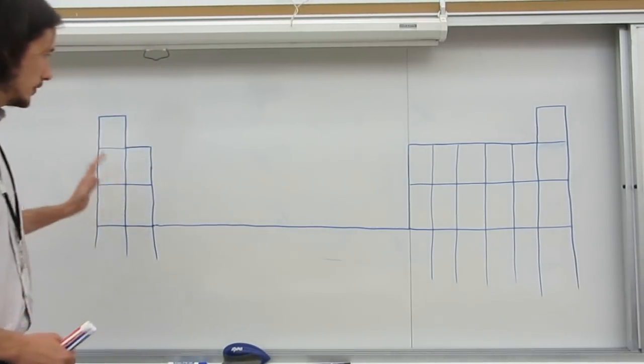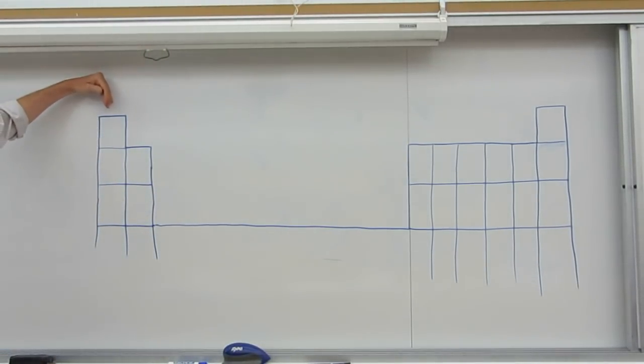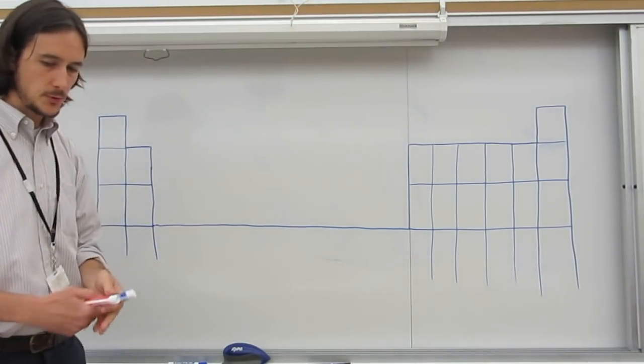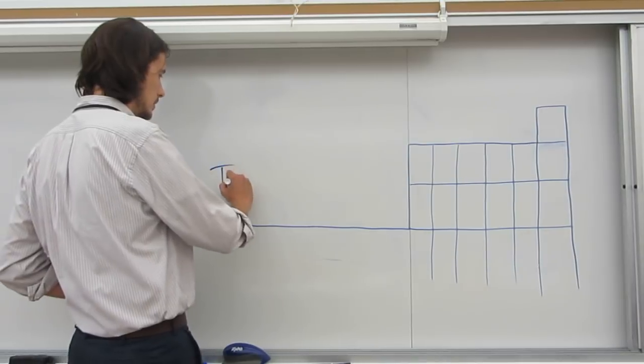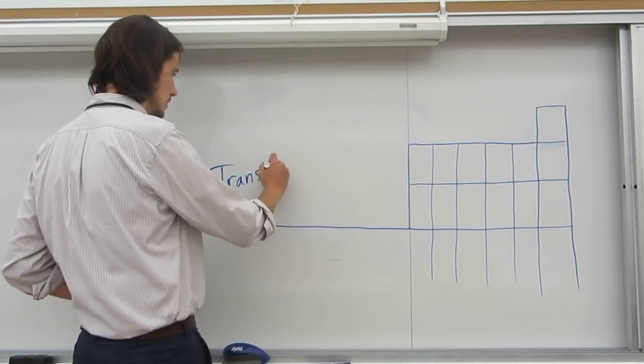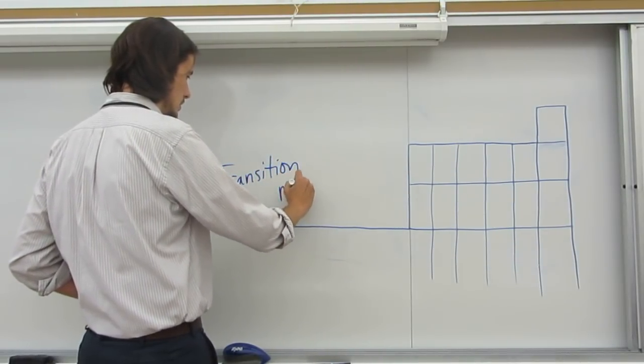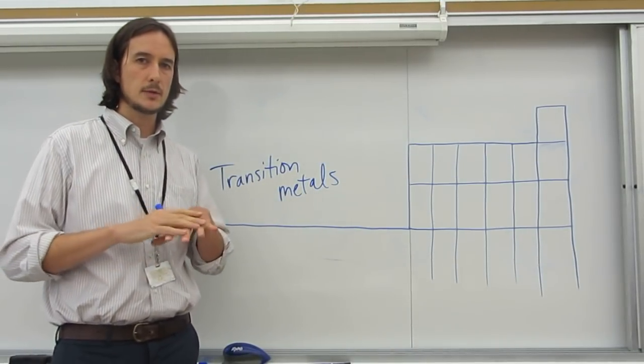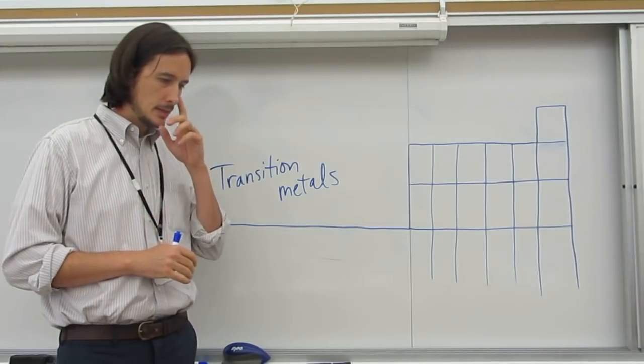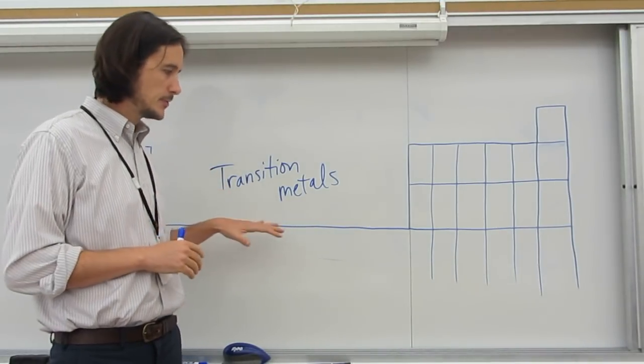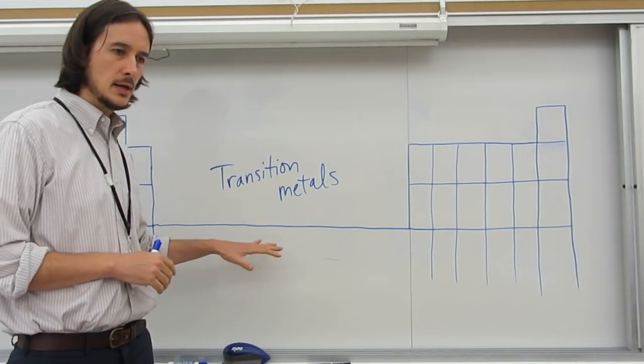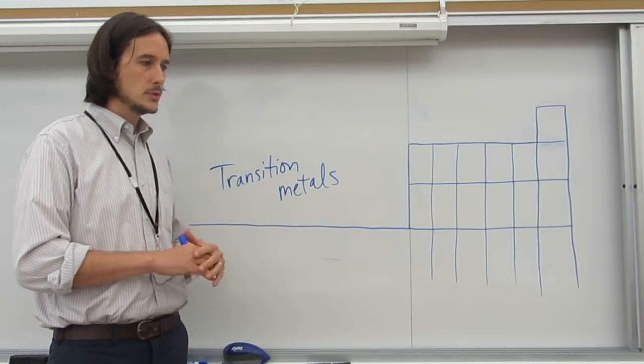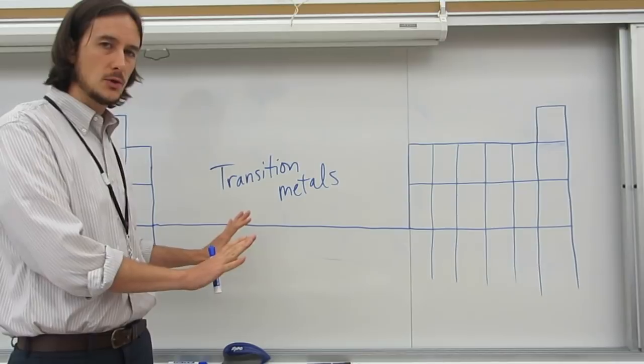So we've got, this is group 1, group 2, this is group 3 through 12. Group 3 through 12 are called transition metals. And for the transition metals, we're not gonna write anything above them. Some of the elements there, they will tend to form more than one ionic charge. So we'll just leave that alone for now.